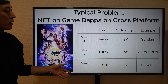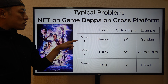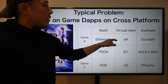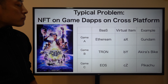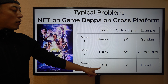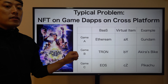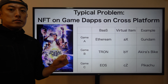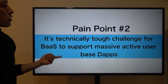For example, there are major blockchain platforms such as Ethereum, Tron, and EOS. Each platform has their own blockchain game — game A, game B, game C — with unique NFT virtual items like Gundam or Pikachu. In a Ready Player One world you could carry that Gundam from Ethereum to EOS, but current blockchain platforms don't support that. That's why communication protocol technology is very critical.